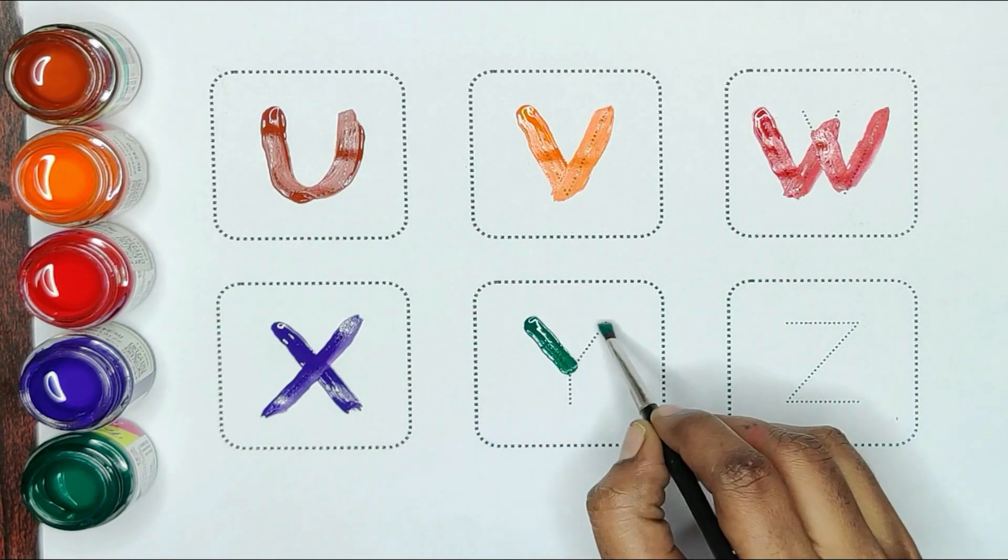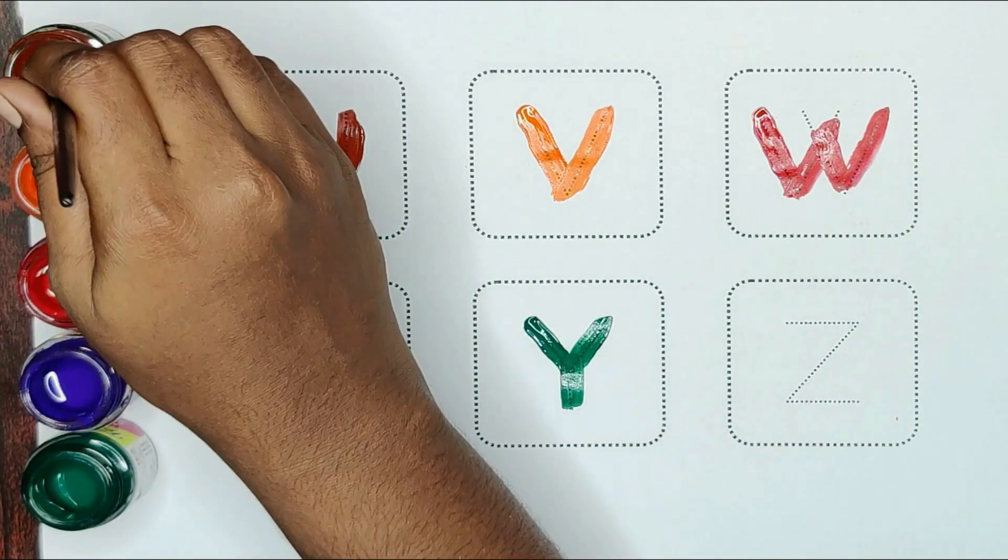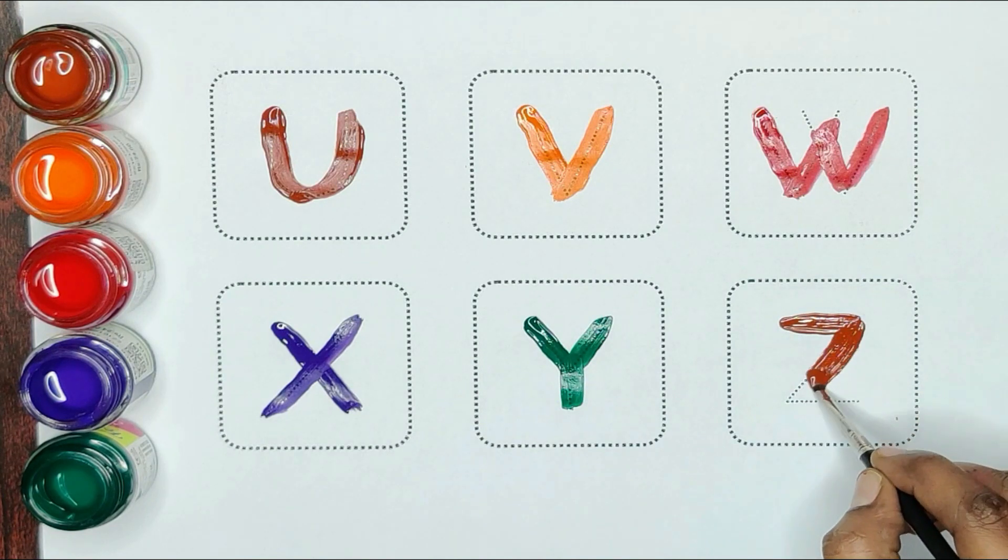Green color, Y. Y for yacht. Brown color, Z. Z for Zebra.